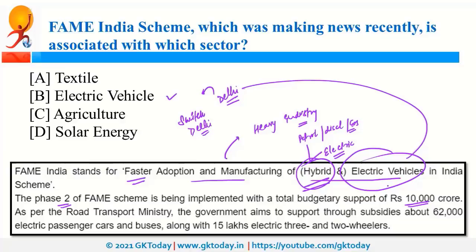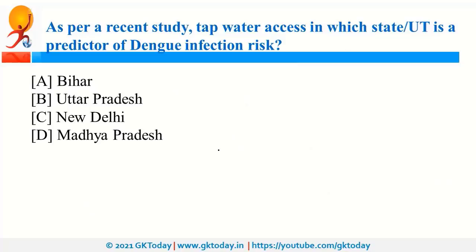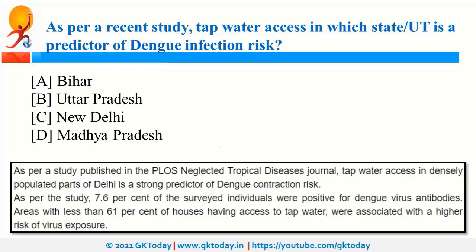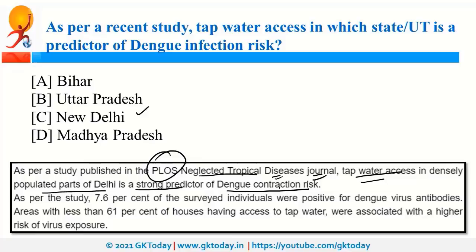As per a recent study published in the PLOS Neglected Tropical Diseases Journal, tap water access in the densely populated areas of Delhi is a strong predictor of dengue infection risk. A survey found that houses with access to tap water are associated with a higher risk of dengue virus exposure. Neglected tropical diseases are diseases found in tropical countries that are generally neglected in terms of research and funding.